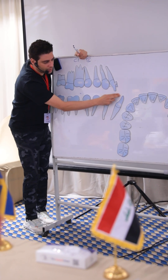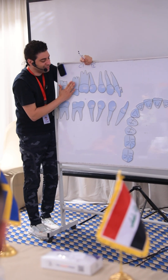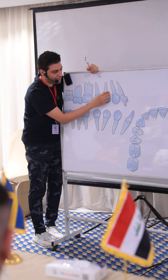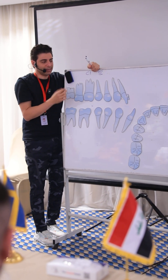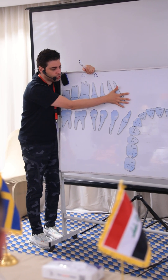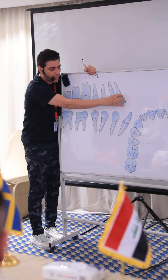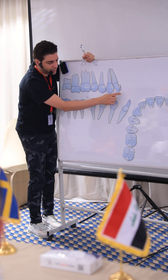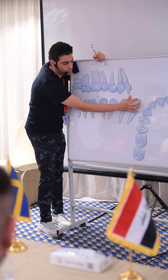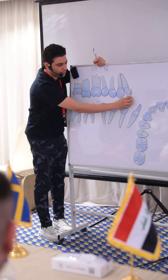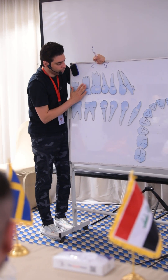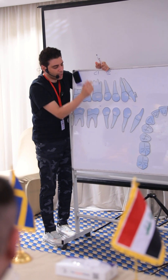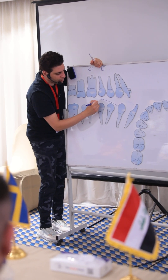We have Class 3 with crossbite, and the most difficult Class 3 case is Class 3 with crossbite and upper spaces. The problem is that if you put a power chain on the upper arch, the upper teeth will be retracted and the posterior teeth will be mesialized, but the reverse overjet will start to increase. So you should not put a power chain on the upper arch.